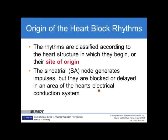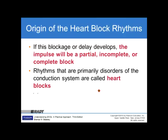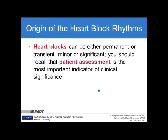The rhythms are classified according to the heart structure in which they begin, or their site of origin. The sinoatrial node generates impulses, but they are blocked or delayed in the area of the heart's electrical conduction system — these are AV nodal blocks. If the blockage or delay develops, the impulse will result in a partial, incomplete, or complete heart block. Rhythms that are primarily disorders of the conduction system are called heart blocks. Heart blocks can be either permanent or transient, minor or significant. Patient assessment is the most important indicator of clinical significance.